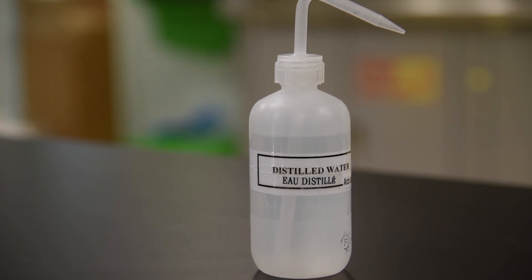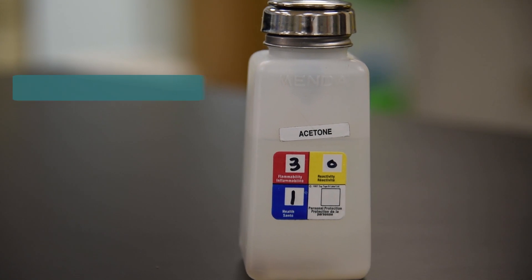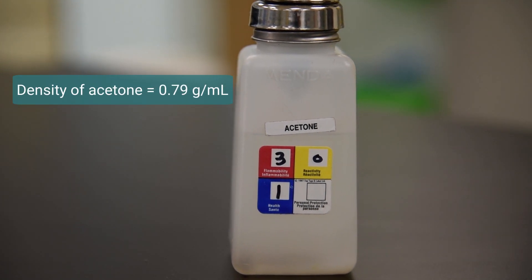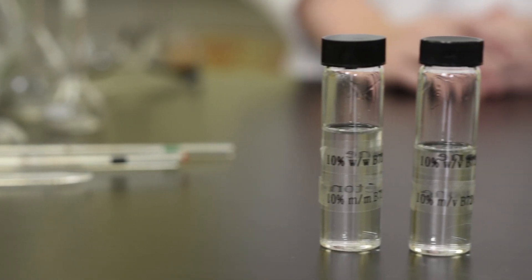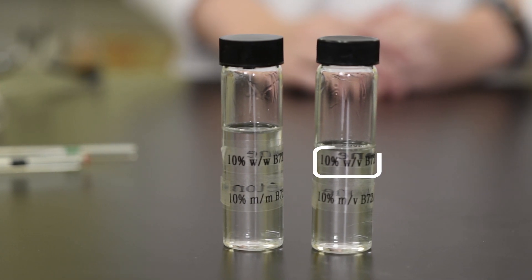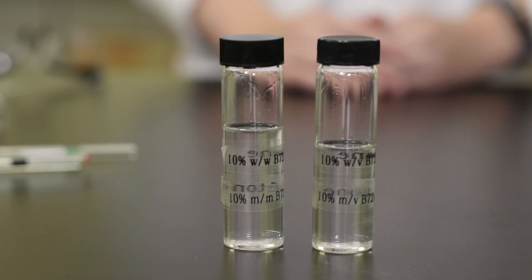Acetone, however, has a density of 0.79 grams per milliliter, which means that a 10% weight by volume solution of Paraloid B-72 in acetone will contain more adhesive and will be more viscous than a 10% weight by weight solution.